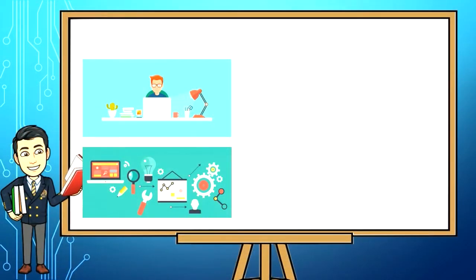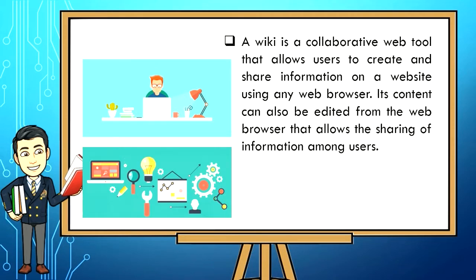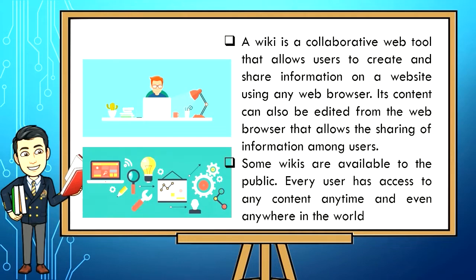A wiki is a collaborative web tool that allows users to create and share information on a website using any web browser. Its content can also be edited from the web browser, which allows the sharing of information among users. Some wikis are available to the public — every user has access to any content anytime and even anywhere in the world.